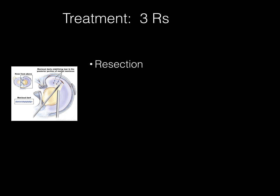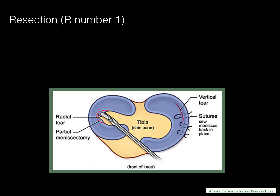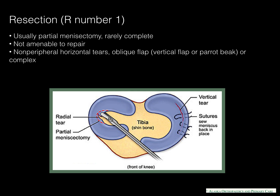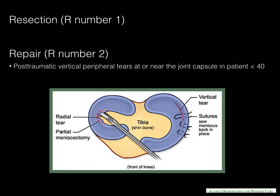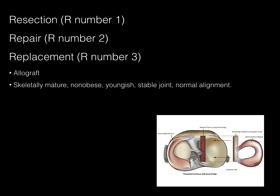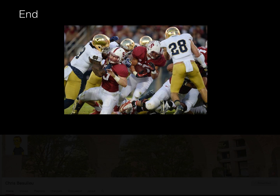Treatment of the meniscus consists of the three R's: resection, repair, and replacement. Resection is usually a partial meniscectomy — the goal is to leave as much normal meniscal tissue as possible, performed when the tear is not amenable to repair, such as a non-peripheral horizontal tear, oblique flap, or complex tear. Repair is usually performed for post-traumatic vertical peripheral tears at or near the joint capsule in younger patients. Replacement is done with an allograft in skeletally mature, non-obese, young patients with stable joints and normal alignment; contraindications include advanced cartilage loss, chondrosis, and infection. This concludes the talk.